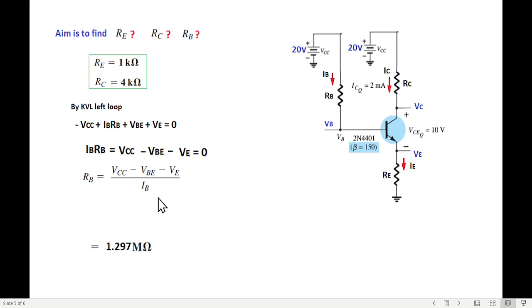IB we don't know, but we have a relationship between IB and IC. We know beta times IB equals IC. From there, IB equals IC over beta. Beta is given as 150, IC was 2 milliampere. So IB is 13.33 microampere. So now put the values. Our IB is 1.297 megaohm.